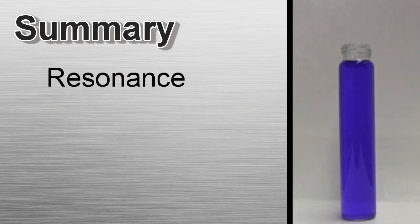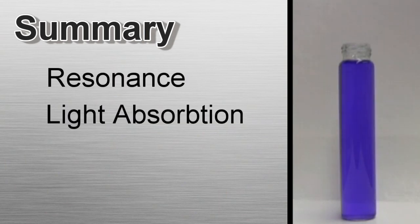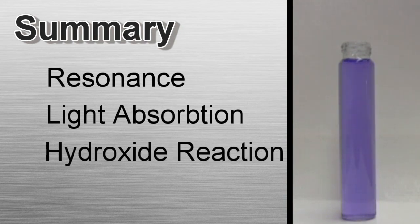The resonance in the structure allows crystal violet to absorb light in the visible spectrum. When the crystal violet molecule finds a hydroxide ion, they react, the resonance is disrupted, and the crystal violet can no longer absorb light in the visible spectrum. Therefore, it becomes colorless.